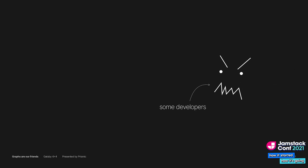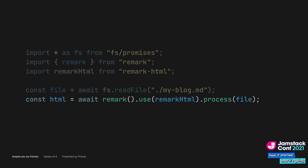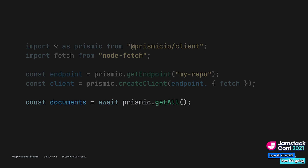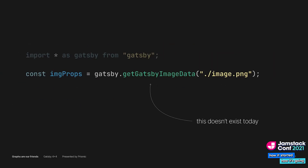Some developers see this as unnecessarily complex. Why can't I just read my markdown files? a developer might ask — I can just import remark, open the file, and convert it with the process function. Others may ask: doesn't my CMS have a client library? All I need to do is install the library, create a client, and call getAll to get all my documents. And why can't Gatsby just give me a function like getGatsbyImageData?